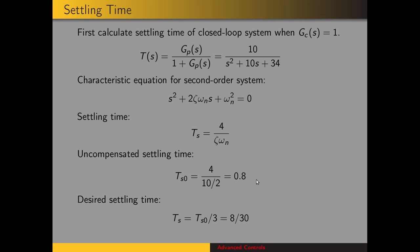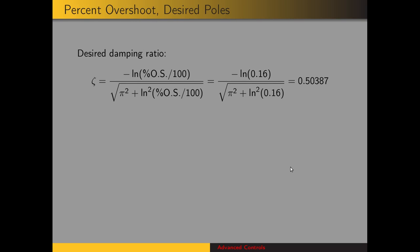Our desired settling time is a third of that, so 8/30 seconds. The desired damping ratio zeta is given by the natural log of percent overshoot divided by the square root of pi squared plus the natural log squared of percent overshoot. That gives us a damping ratio of 0.504.